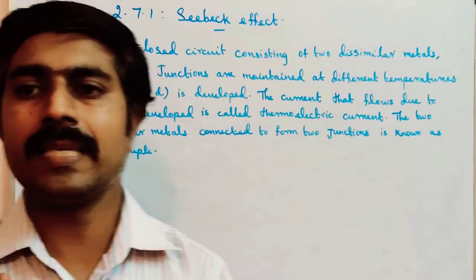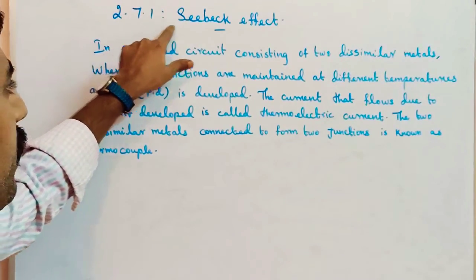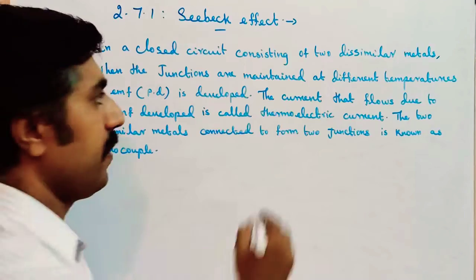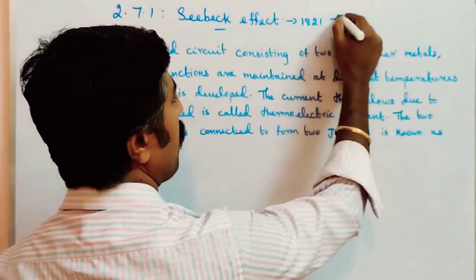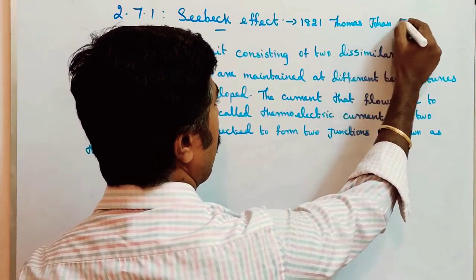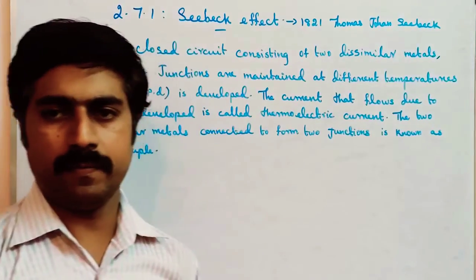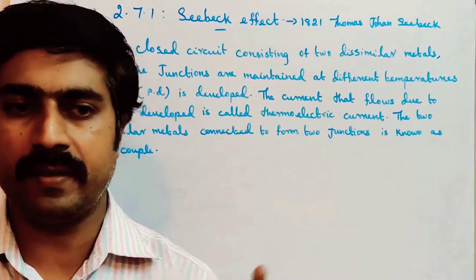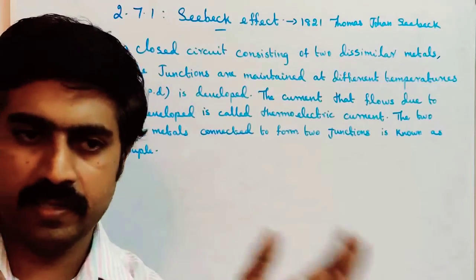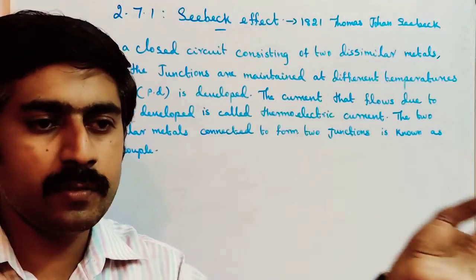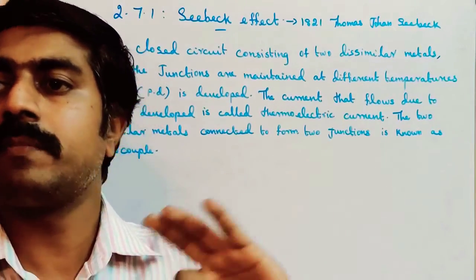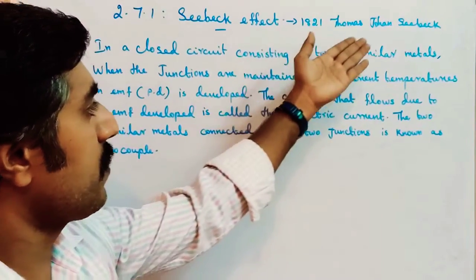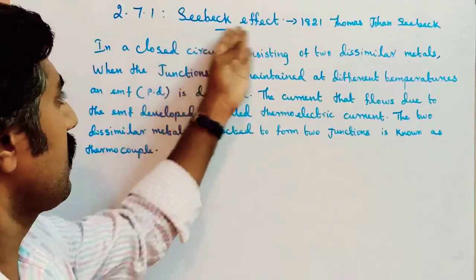Today's topic is the Seebeck Effect, topic number 2.7.1. This is the 12th physics second lesson. It was explained by Thomas Johann Seebeck in the year 1821. We know that thermal energy, meaning heat energy, can be converted into electric energy, and electric energy can be converted into thermal energy. This is called the thermoelectric effect.